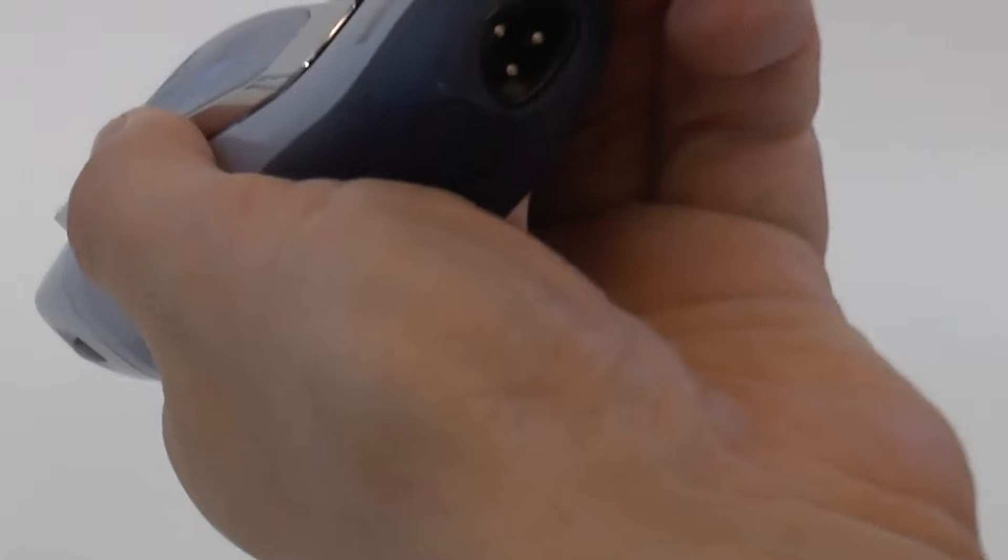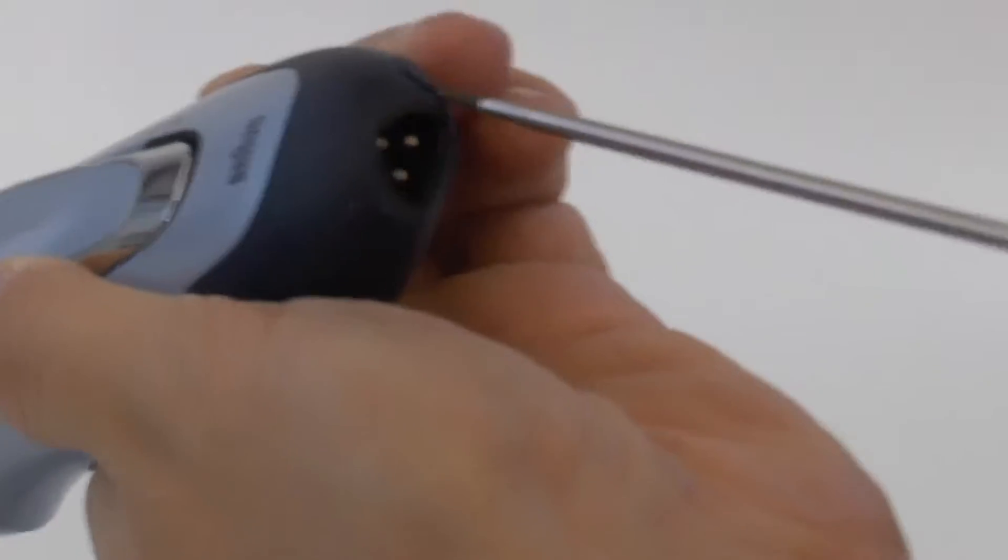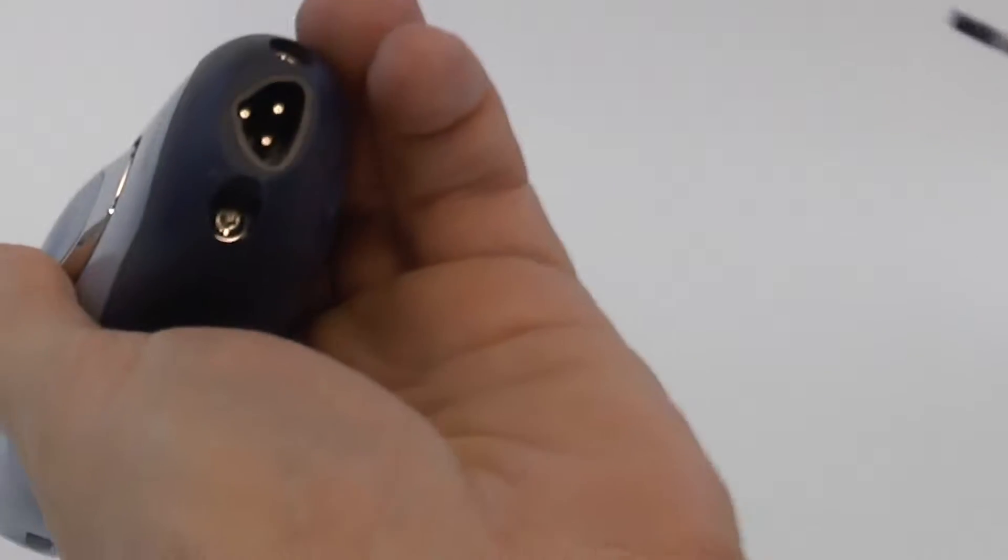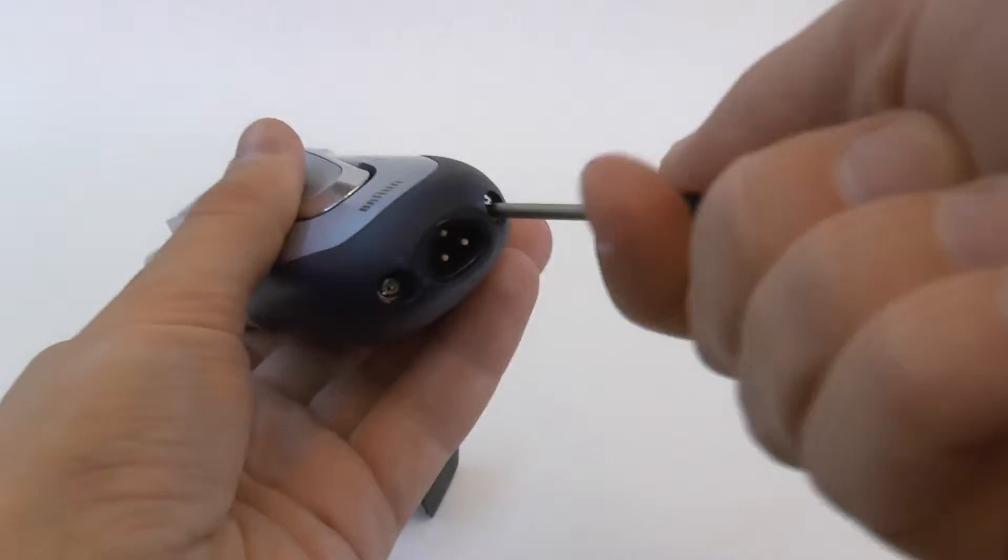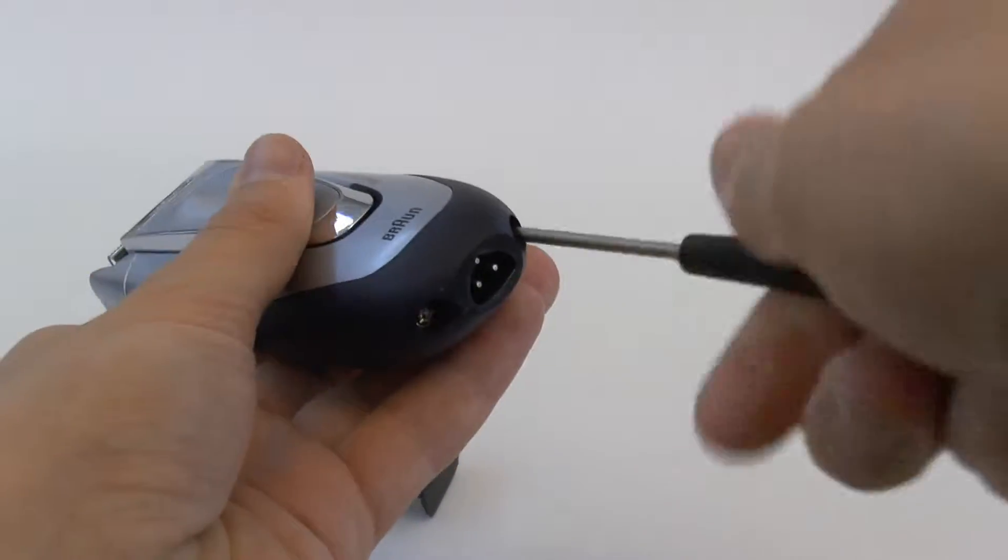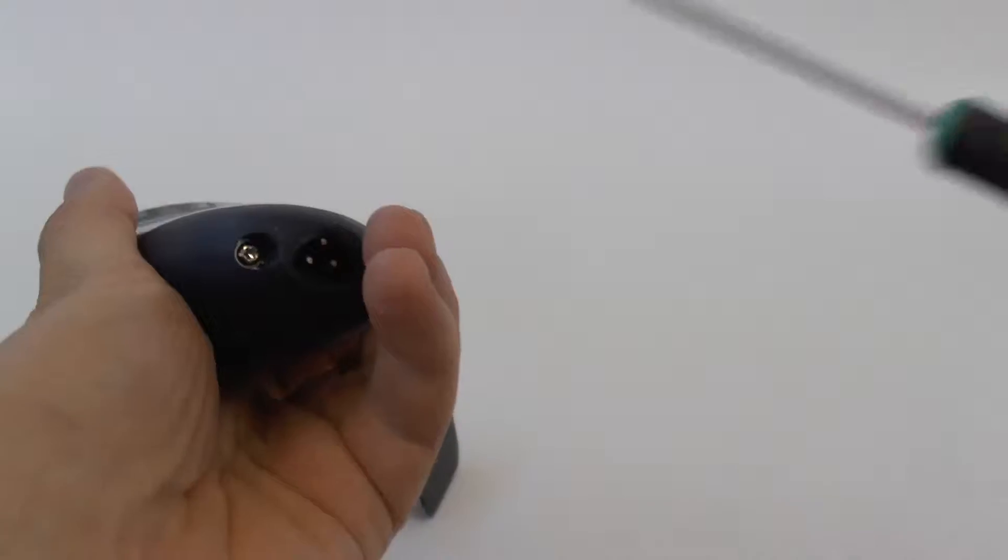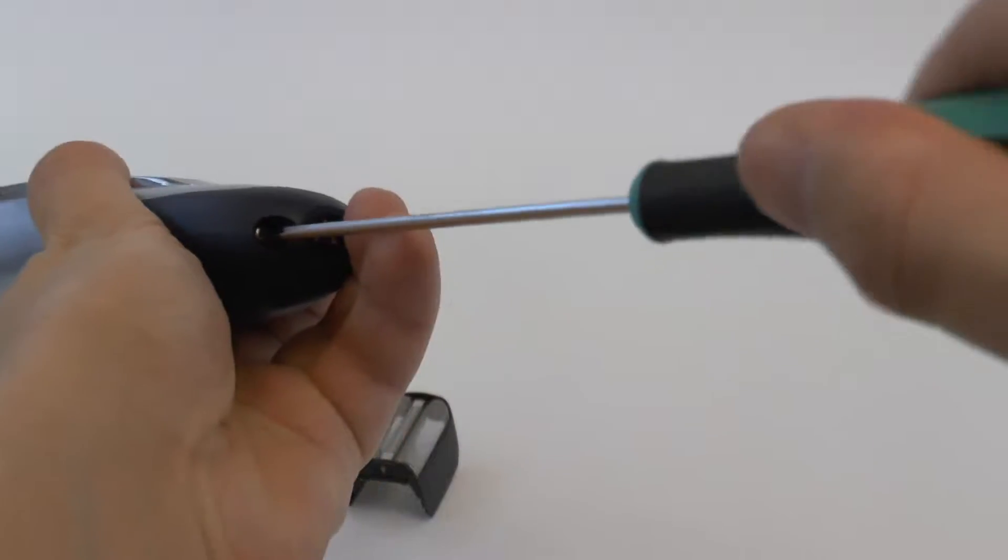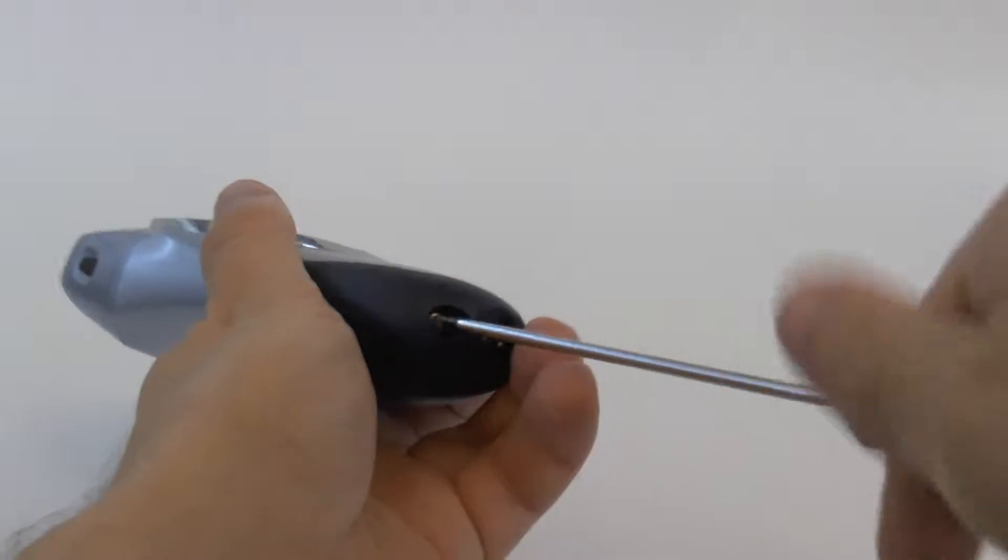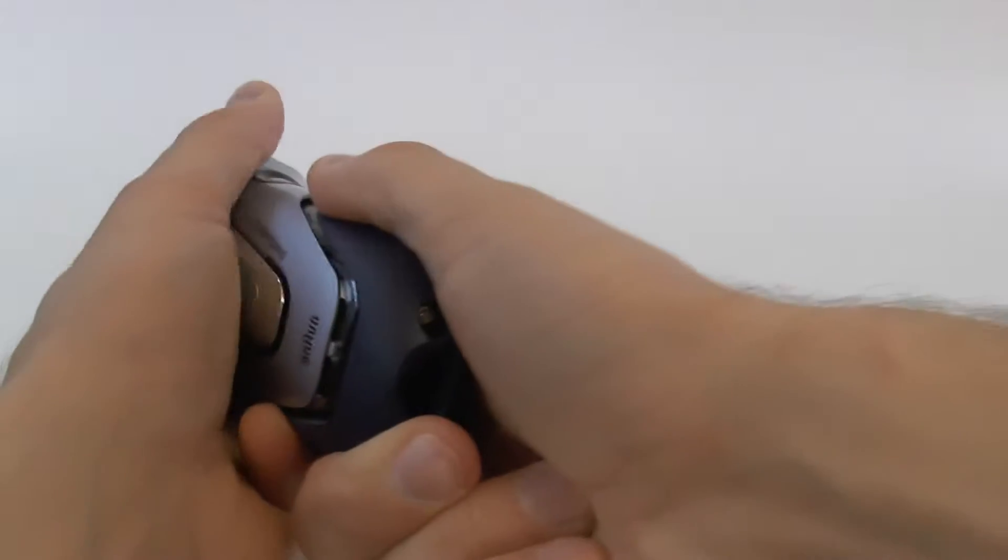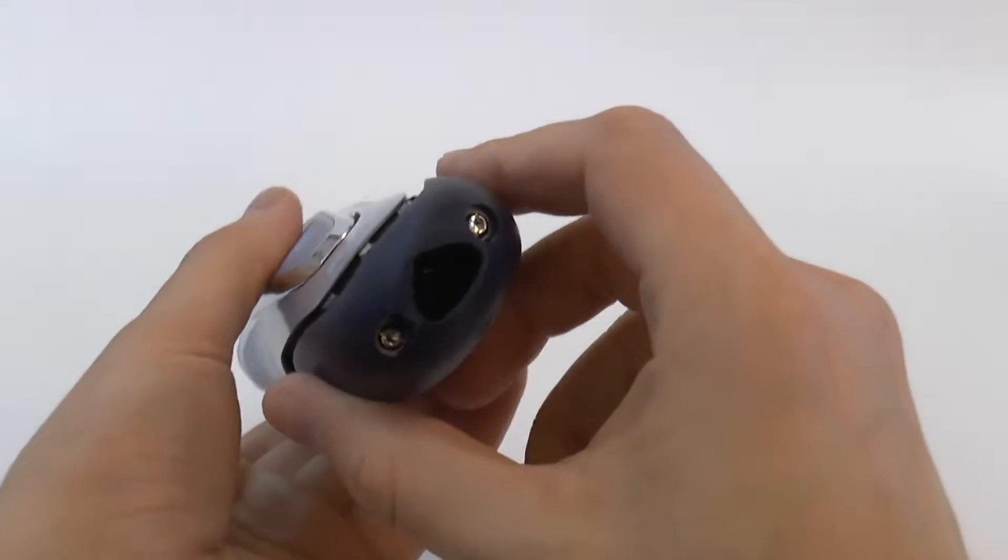The obvious starting point is at these rubber screw covers. The screws need a Torx T9 screwdriver. But I use a wrong one. The rubber grip slides right off.